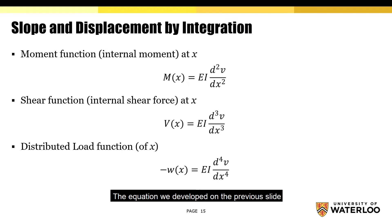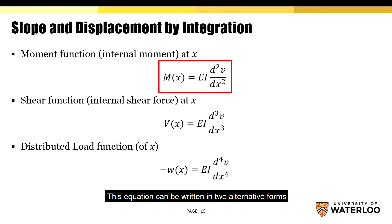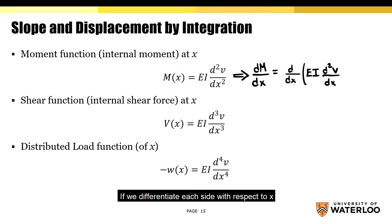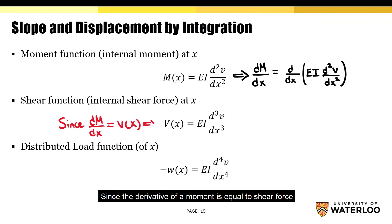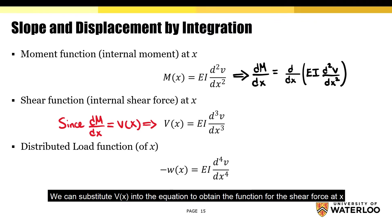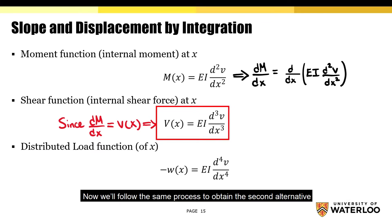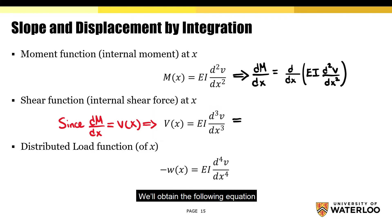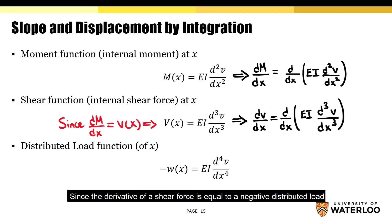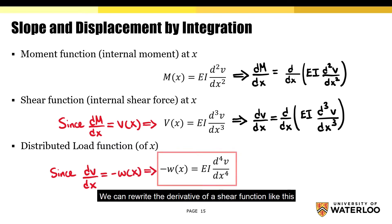The equation we developed on the previous slide represents the internal moment function at x. This equation can be written in two alternative forms. If we differentiate each side with respect to x, we'll end up with the following equation. Since the derivative of a moment is equal to a shear force, we can substitute V(x) into the equation to obtain the function for the shear force at x. Now if we differentiate each side of the shear function with respect to x, we'll obtain the following equation. Since the derivative of a shear force is equal to a negative distributed load, we can rewrite the derivative of a shear function, and this equation represents the distributed load function.